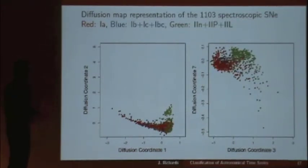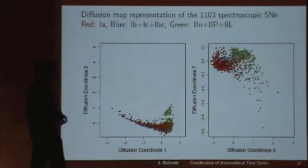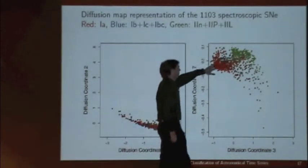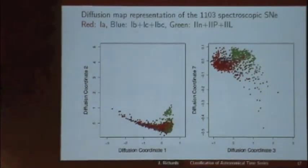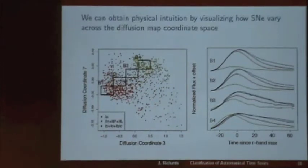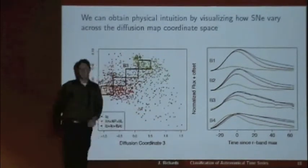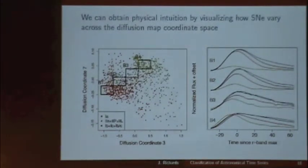It's a great way of getting a sparse representation of really complicated data that preserves the structure of the dataset. Using data from the supernova challenge — input data of four-dimensional time series, sparsely sampled — projecting into different diffusion map coordinates, we see that there's some structure. We can build a classifier in this space, and it turns out the third and seventh coordinates do a pretty good job separating out the different types. We can also use this to get astrophysical insight by examining what exactly is changing in these time series as you step across the space.